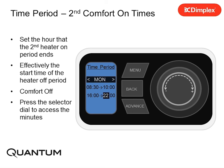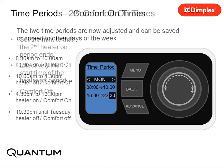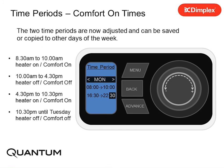Effectively the start time of the heater off period — comfort is off. Press the selector dial to access the minutes. Set the minutes that the second heater on period ends, effectively the start time of the heater off period — comfort is now off. The two time periods are now adjusted and can be saved or copied to other days of the week.